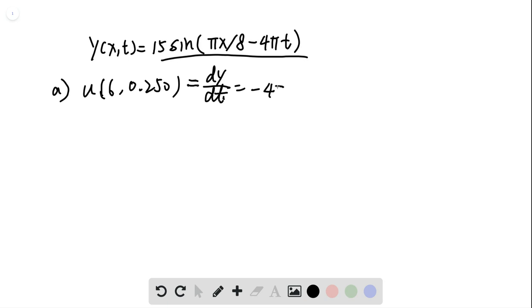It's negative 4 pi times 15, and let's double check. Everything is in terms of centimeter, times cosine pi x over 8 minus 4 pi t. And then when t is 0.25, and when x is equal to 6